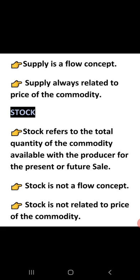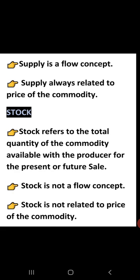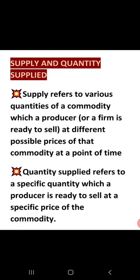As far as stock is concerned, stock is the total quantity of the commodity — the total quantity available with the producer for present or future sale. Whatever the total quantity of a commodity is, that is the stock. Unlike supply, which is a flow concept, stock is not a flow concept, and stock has no relation with price, whereas supply is always determined according to price.